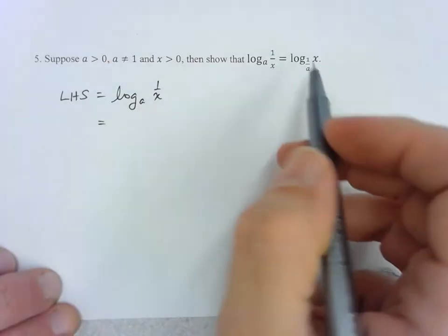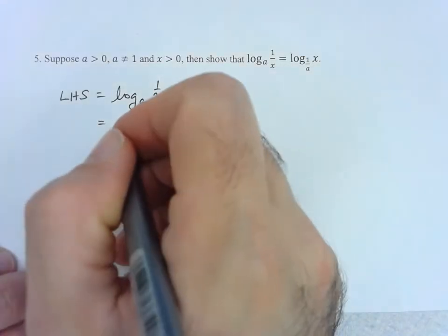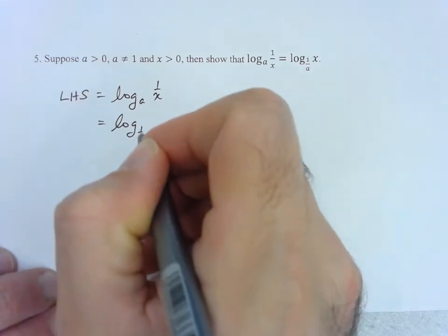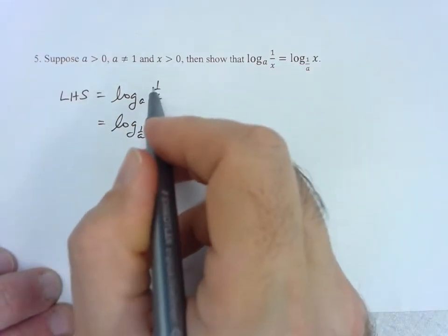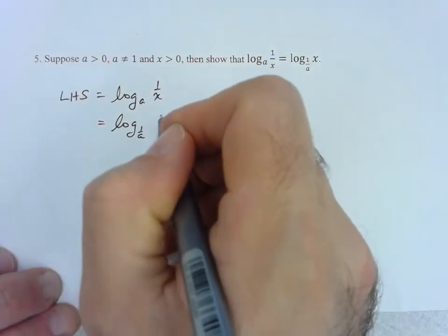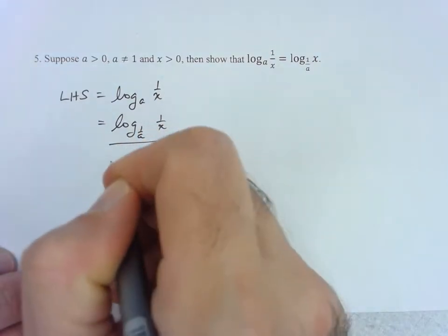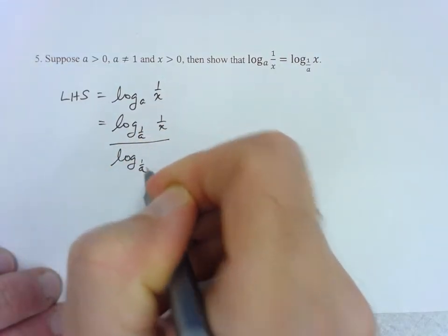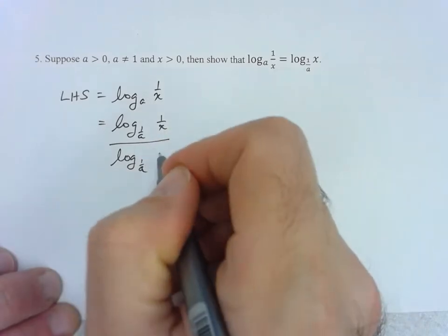I'm going to change that to the same base as the other one. So log base 1/a of the initial input, which is 1/x, over log base 1/a of the original base, which is a.